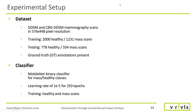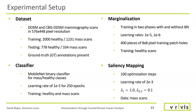We tested our setup using the public DDSM dataset with a downsampled resolution of 576 x 448. As a classifier, we used a MobileNet binary classifier for mass and healthy classification, trained on the complete set. The marginalization network was trained on the healthy subset, while the saliency mapping only utilized the mass scans.